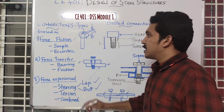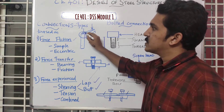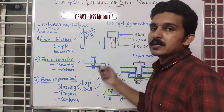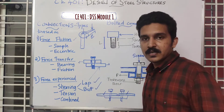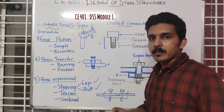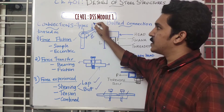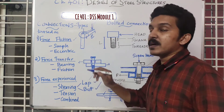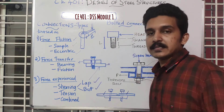In an eccentric connection, the load acts at a particular distance from the connection. For example, if a beam and column are joined here with a bolt or weld and the load acts at a distance E — that eccentricity — it is known as an eccentric connection. In this case, there is a moment equal to P × E acting, so we must consider this moment in design.